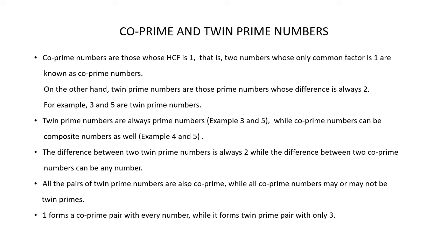For example, 3 and 5 are twin prime numbers and are prime numbers. Now consider co-prime numbers 1 and 2 — both are prime numbers. But consider 4 and 5, which are also co-prime numbers — here 4 is a composite number. So co-prime numbers can be either prime or composite numbers. Also, the difference between two twin prime numbers is always 2, while the difference between two co-prime numbers can be any number.